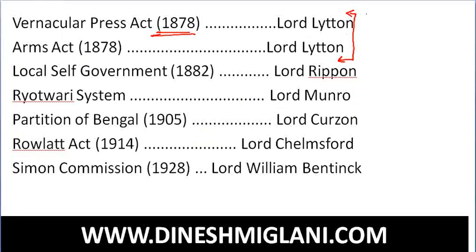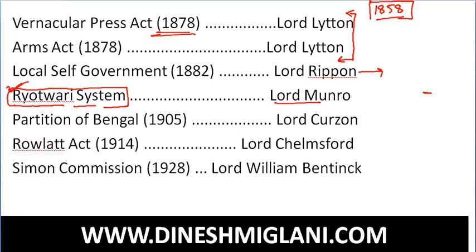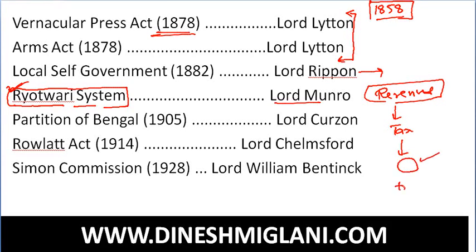After 1858, following the Queen's Act, the head of India was named as Viceroy. Local Self-Government was given by Lord Ripon. Lord Munro gave the concept of the Ryotwari system. There are two types of land revenue systems: Ryotwari and Mahalwari. Under the Ryotwari system, the government directly collected tax from the person actually holding and cultivating the land. That system was given by Lord Munro.